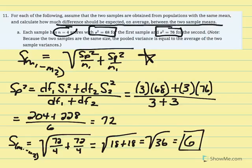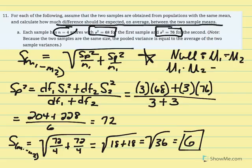So what did we just solve? If the null is true — mu1 equals mu2, or mu1 minus mu2 equals zero — the expected or average difference between the two sample means is 6 points. This gives us a sense that even if the null is true, because of sampling error and chance, the two sample means won't always be equal. The expected difference we'd anticipate if the null is true is 6 points.